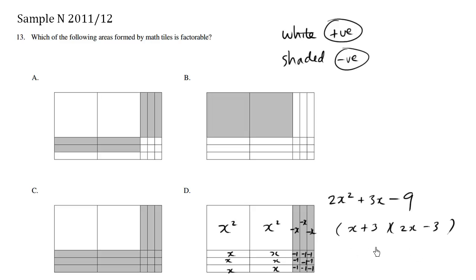So using your factoring skills, you can algebraically factor this out as (x + 3)(2x − 3). The fact that we can factor it means that choice D is the answer.